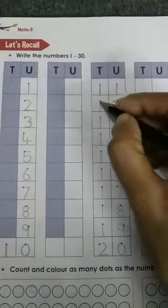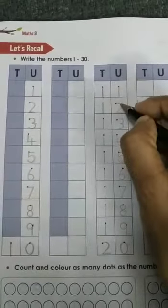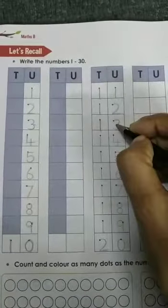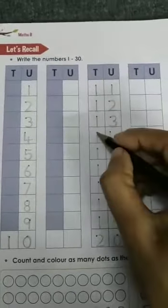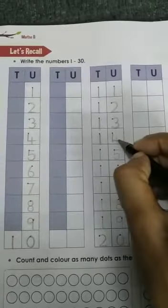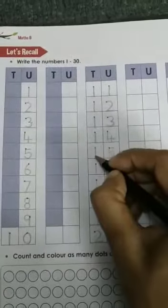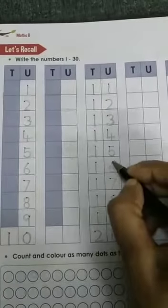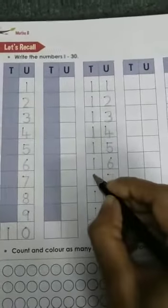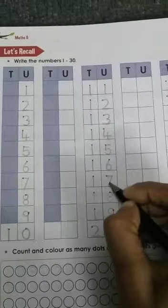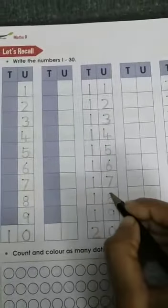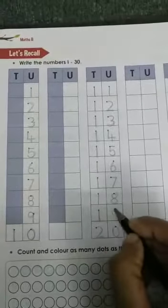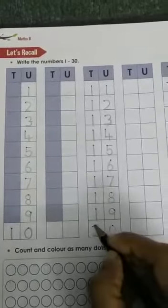11, 12, 13, 14, 15, 16, 17, 18, 18, 18, 19, 20, 20.